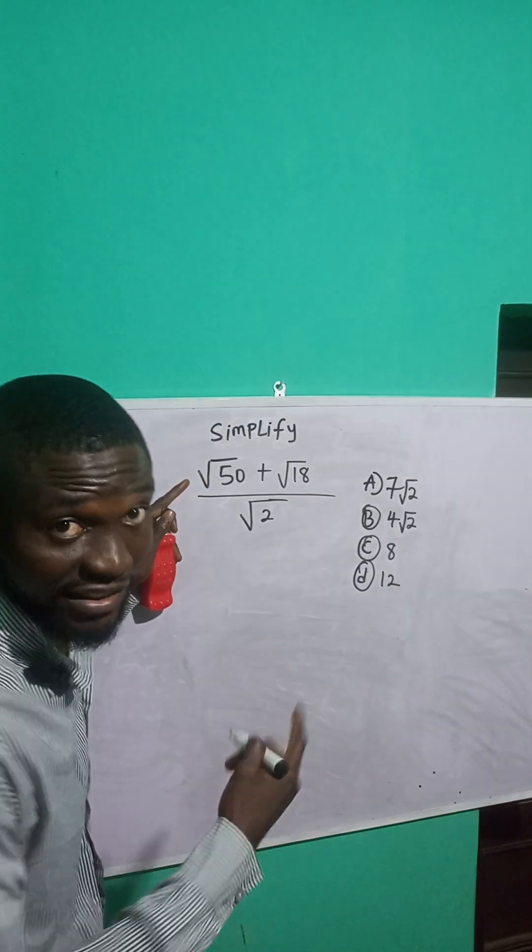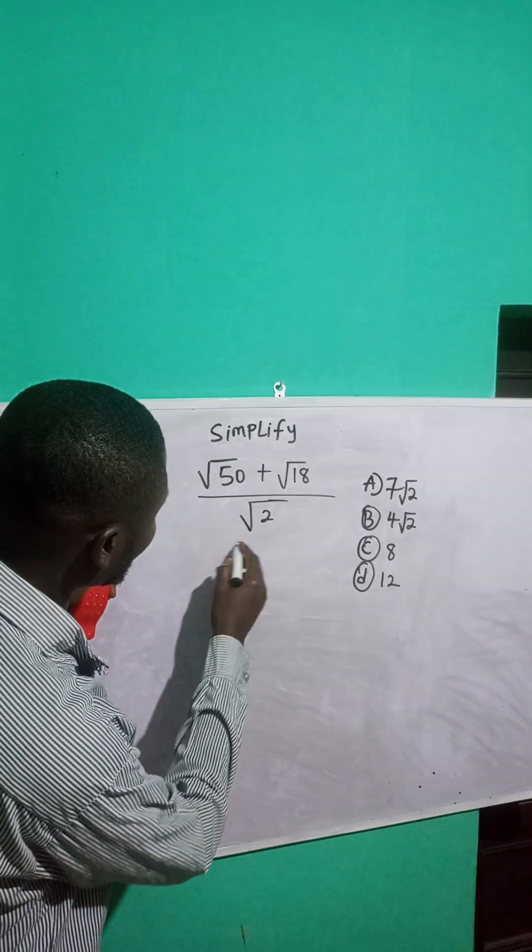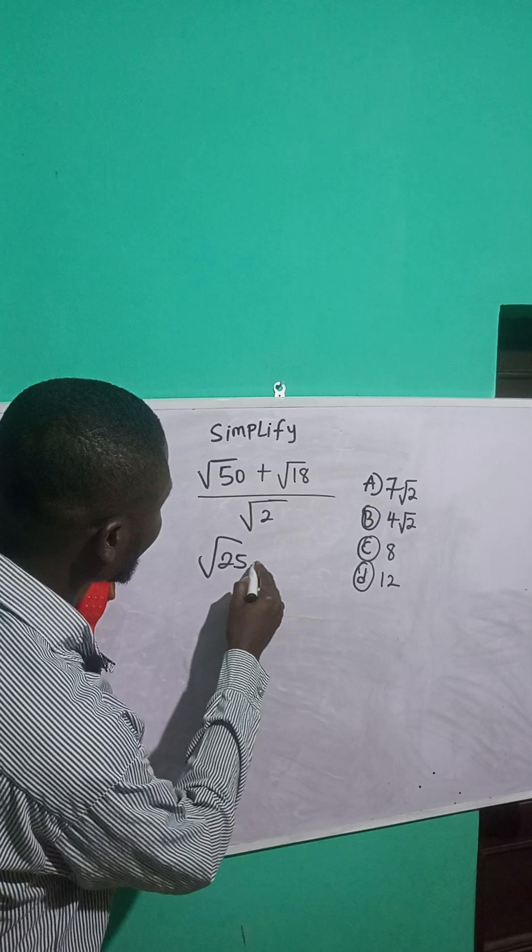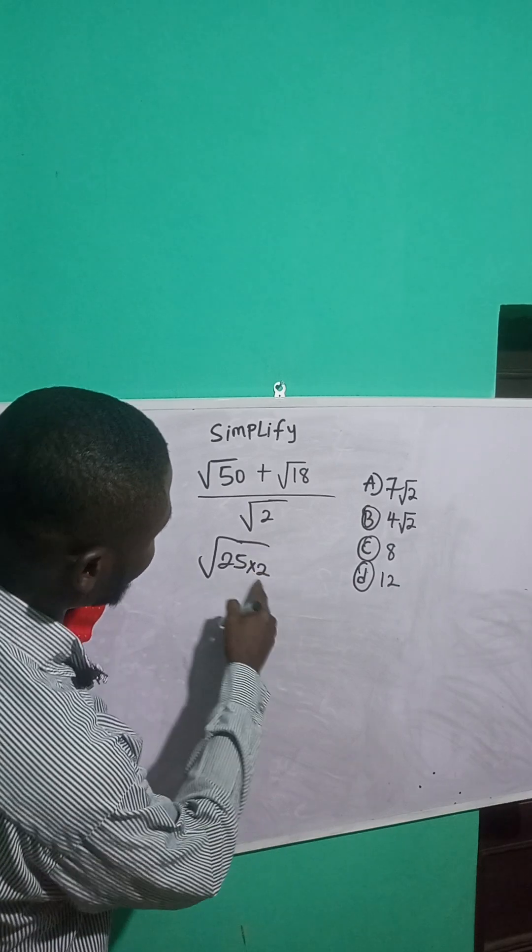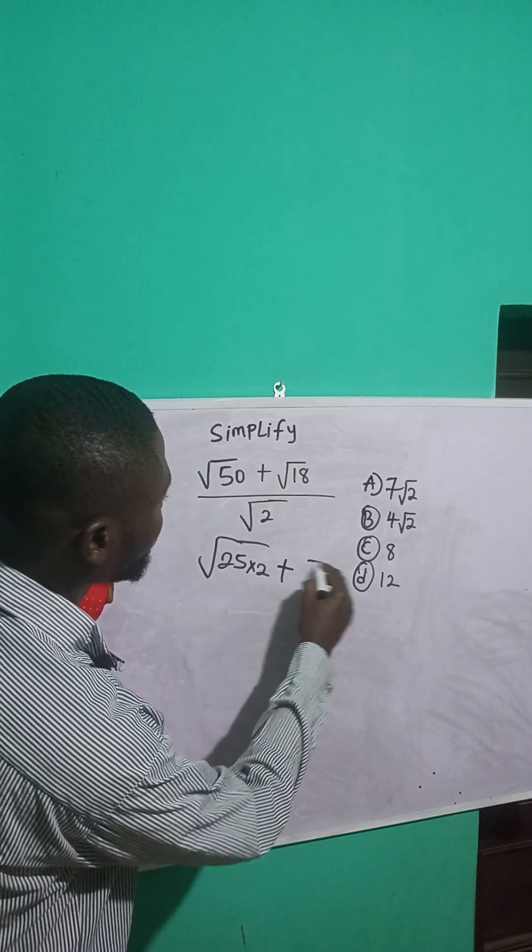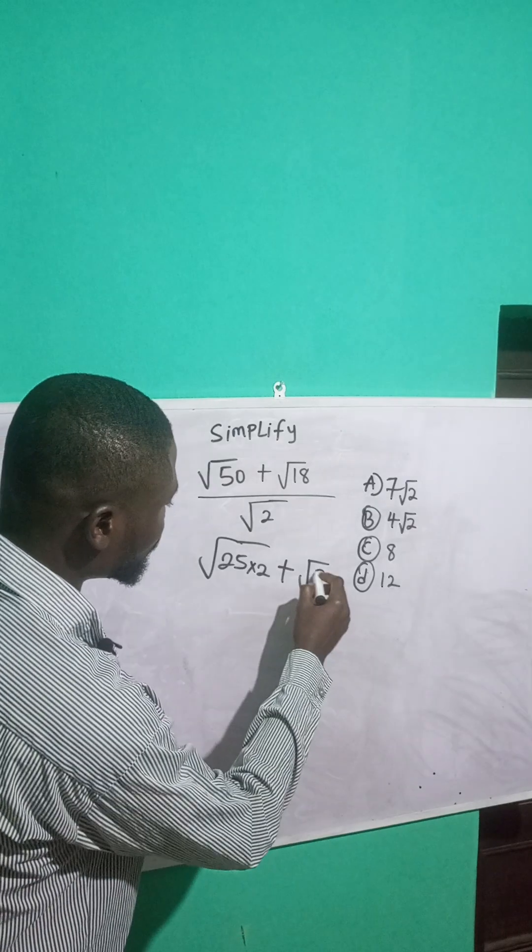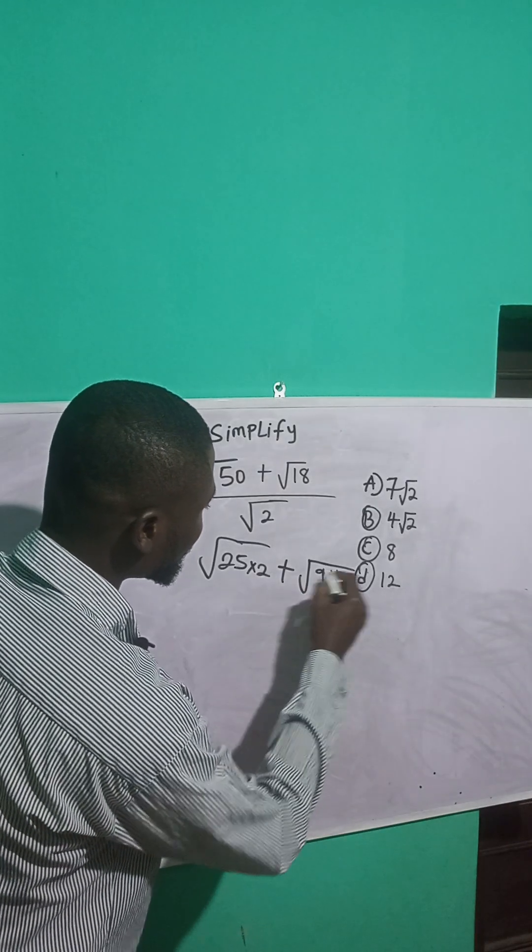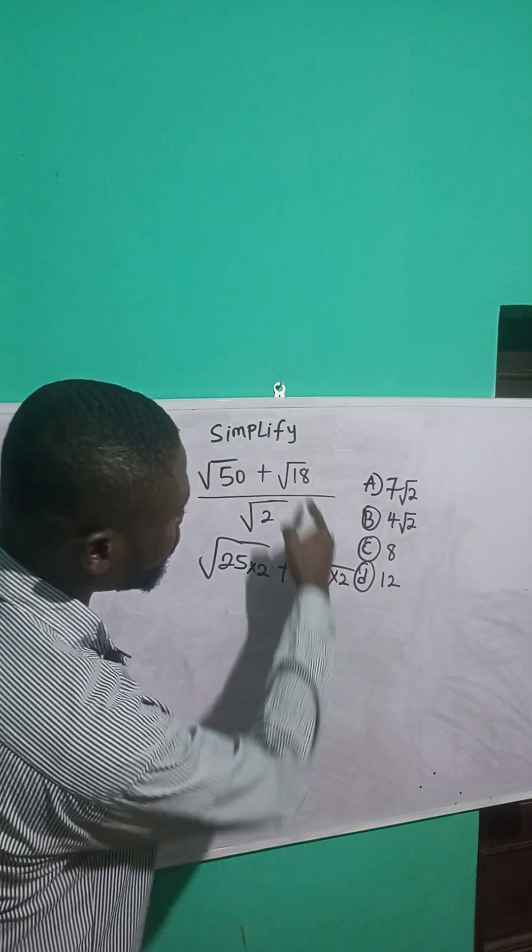Let's simplify this. I can simplify √50 as √(25×2) because 25 times 2 gives me 50, plus I can simplify √18 as √(9×2). 9 times 2 is 18.